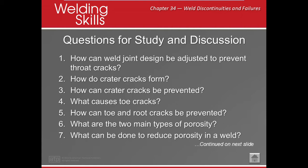What are the two main types of porosity? Surface and subsurface. Surface porosity has usually spherical or elongated holes on the surface of the weld. Subsurface porosity consists of spherical or elongated holes in the body of the weld, and those are usually called wormholes.